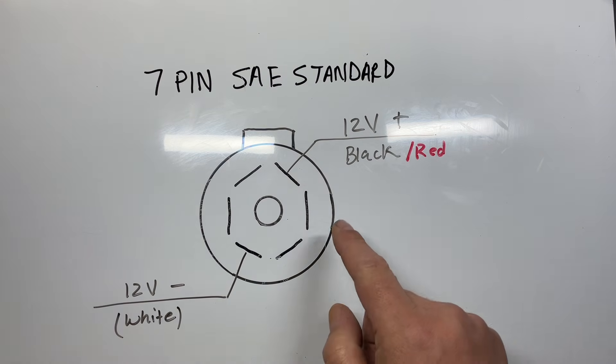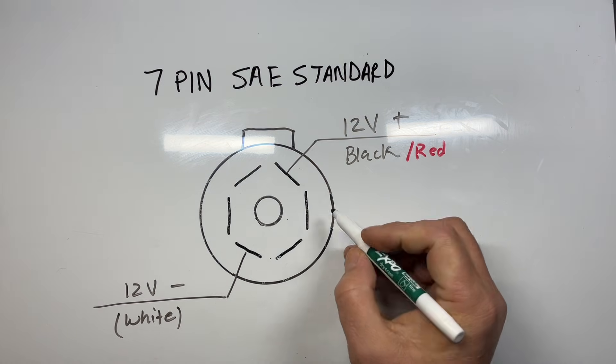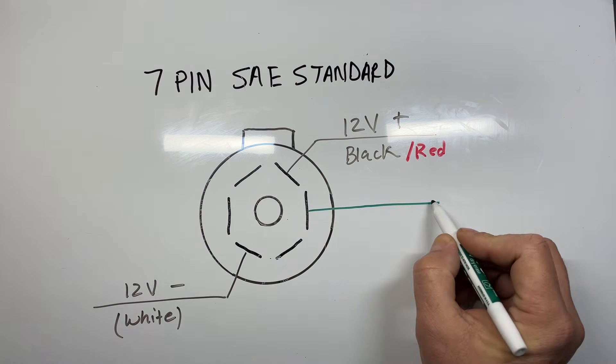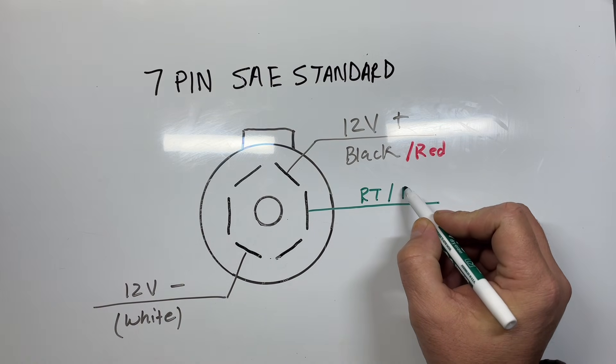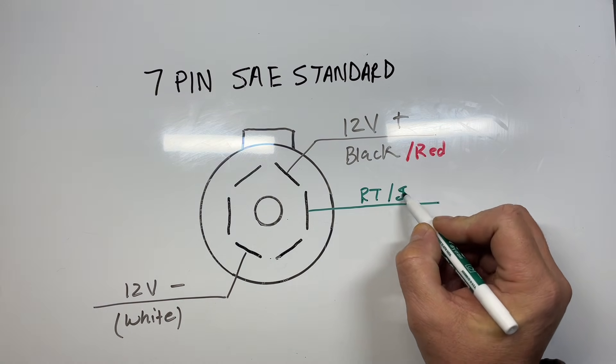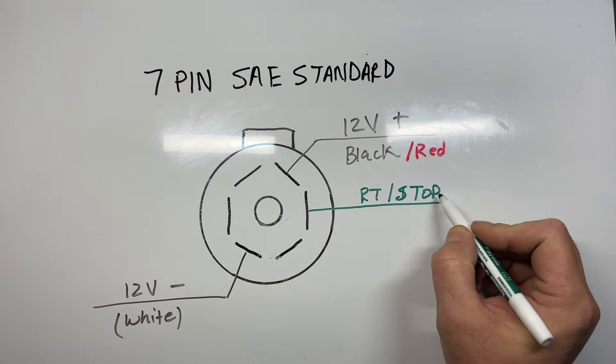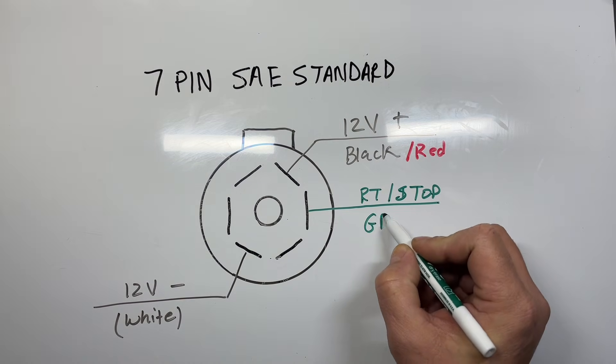Then you have right turn and left turn. On your standard, this is going to be green, will be right turn, and it's also your right stoplight. So it's right turn and stoplights in green.